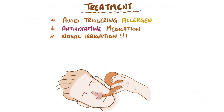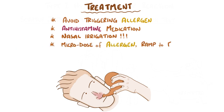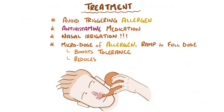In some situations, it's also possible to rewire the body's immune response to an allergen by exposing it to micro doses and slowly ramping up to a full dose of the allergen. This gradually boosts tolerance to the allergen by reducing the immune system's tendency to produce IgE each time.